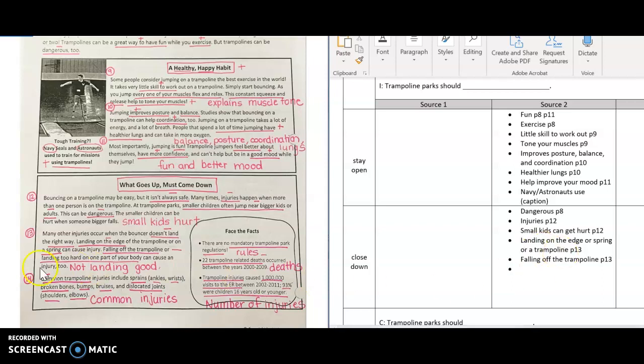Let's see what else we can add. We went down here to paragraph 14 and we learned that there are some common injuries that include sprains, broken bones, bumps, dislocated joints. So we had the common injuries that were listed and identified there in paragraph 14.